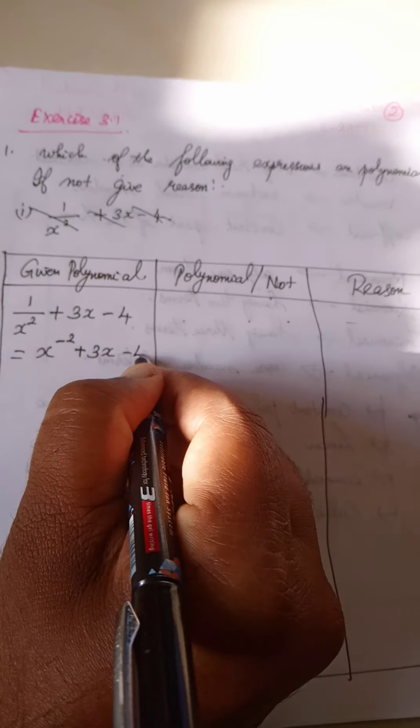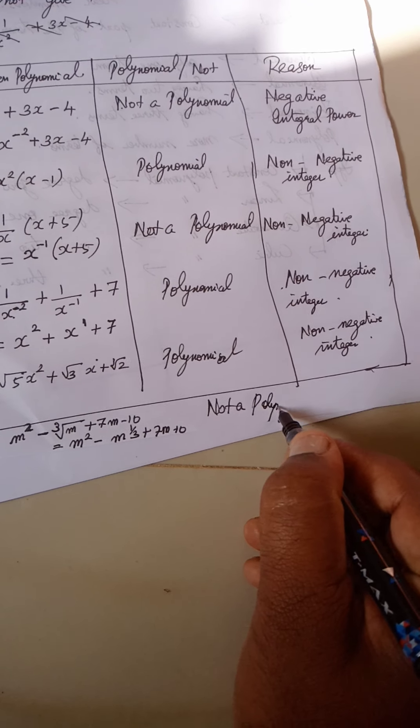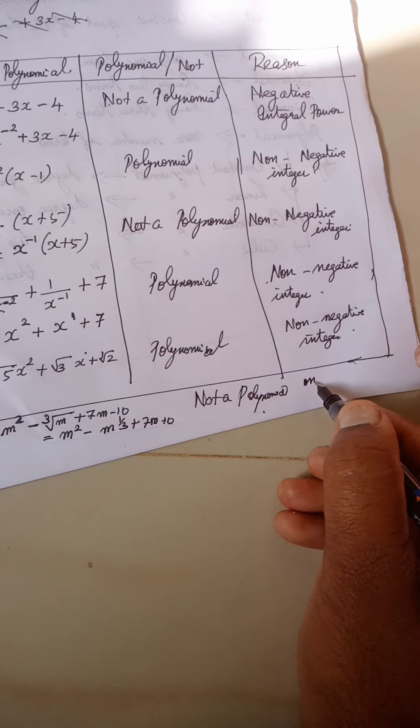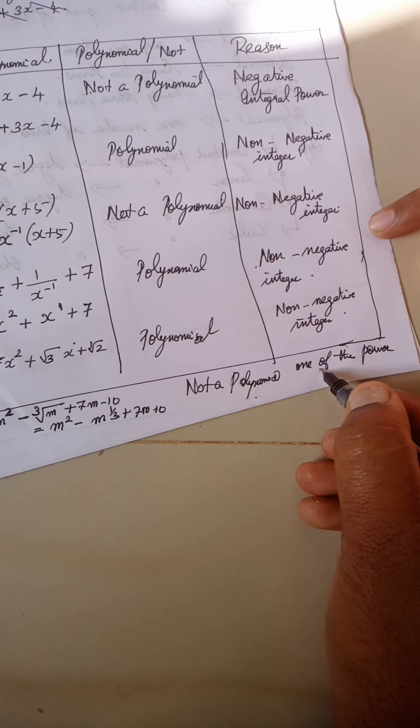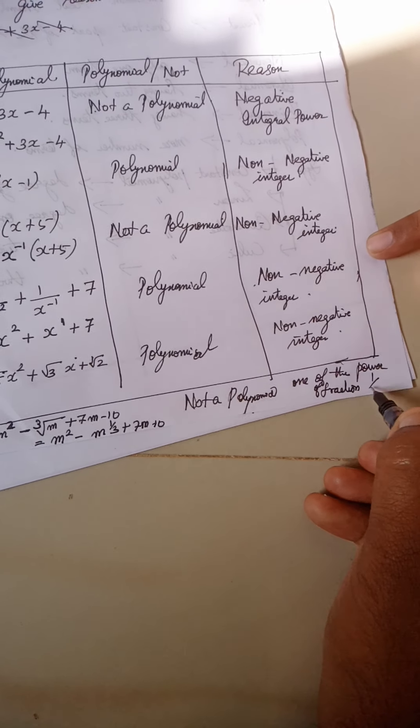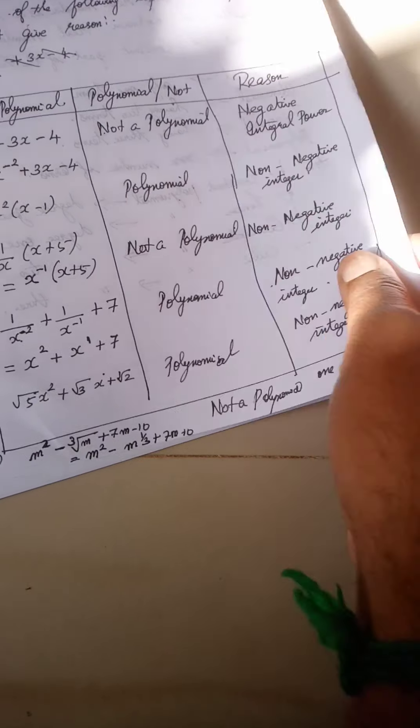Sixth question: M square minus 3 root M plus 7M minus 10. How do we write 3 root M? It becomes M power 1 by 3. So the expression is M square minus M power 1 by 3 plus 7M minus 10. It is not a polynomial. Why? Because the power 1 by 3 is a fraction, not an integer.